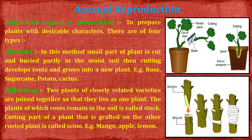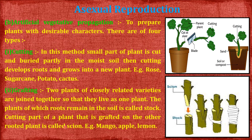The second method is grafting. Two plants of closely related varieties are joined together so that they live as one plant. One plant is cut in a V-shape, and the other plant is inserted into it, then tied with cloth or tape. The plant whose roots remain in the soil is called the stock, and the cutting part grafted onto the rooted part is called the scion. Examples: mango, apple, lemon.